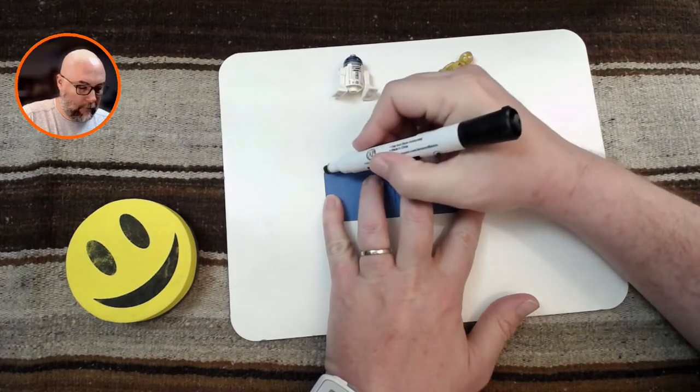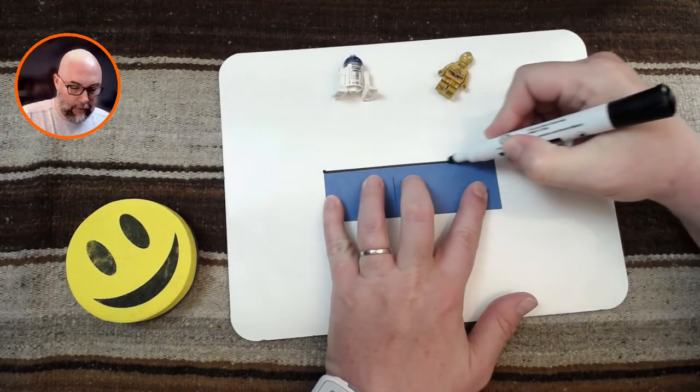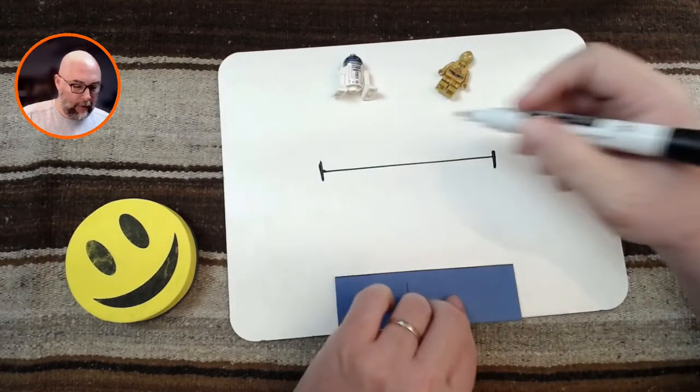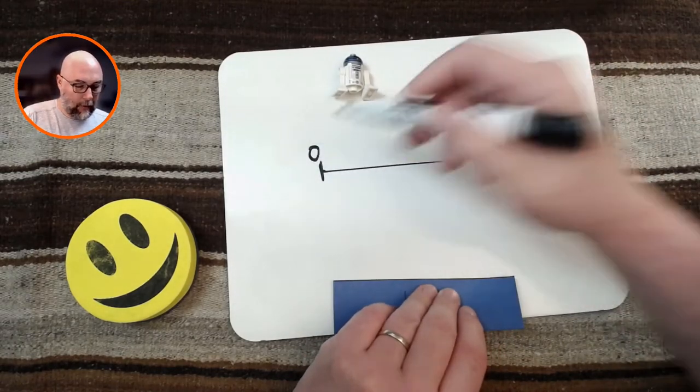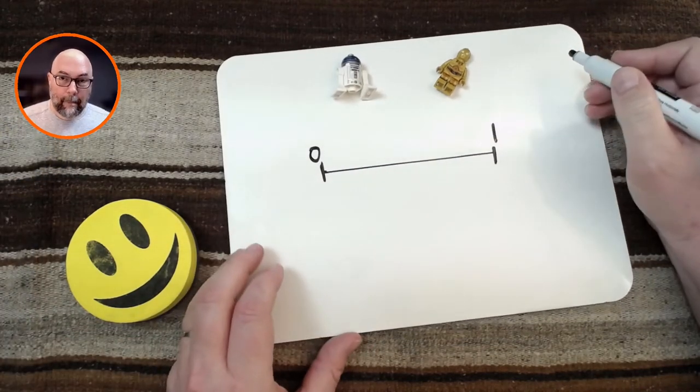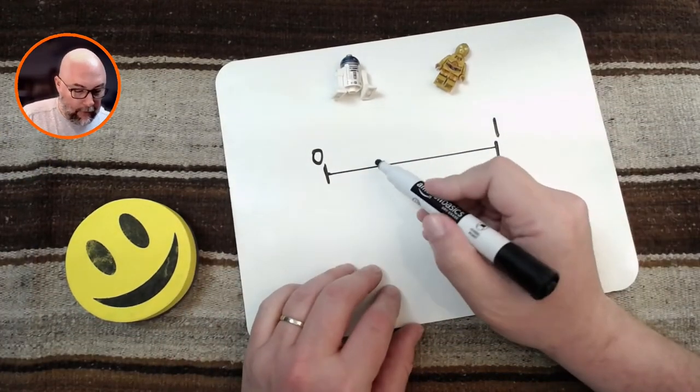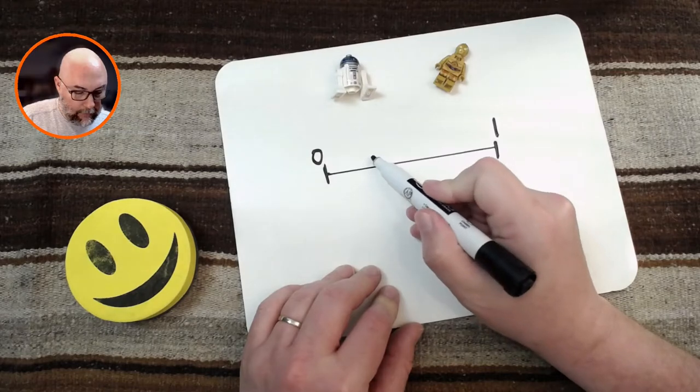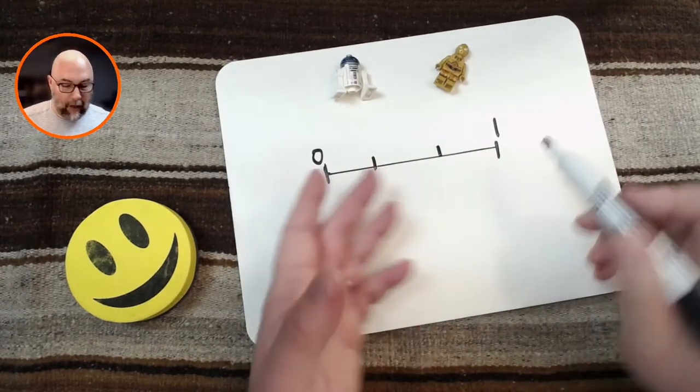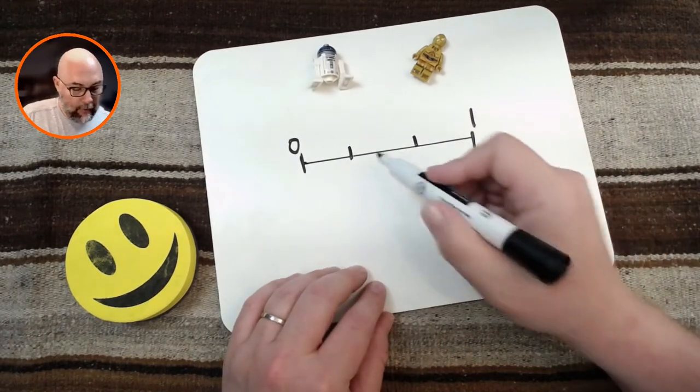I'm going to draw a number line. Okay. So we go all the way from here to here. And this is going to be 0, and this is 1.